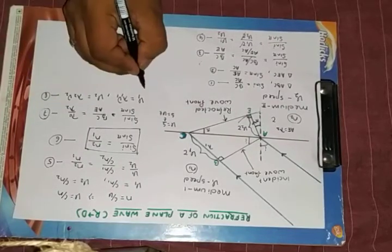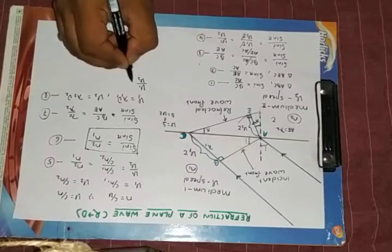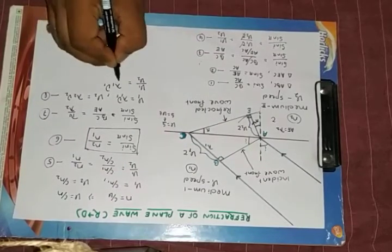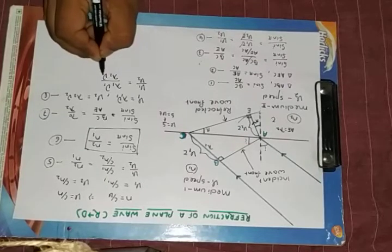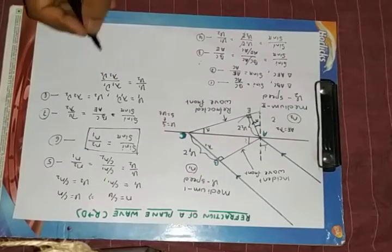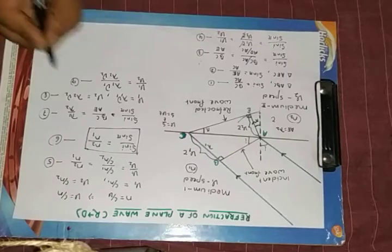put this, I will get v1 by v2 equal to lambda 1 nu 1 by lambda 2 nu 2. Now,